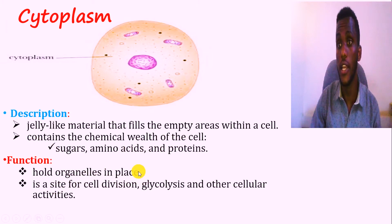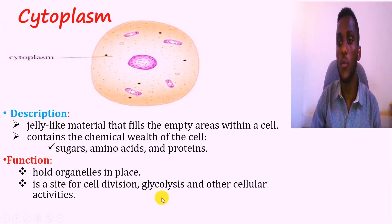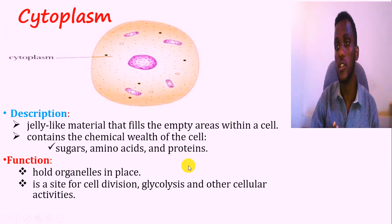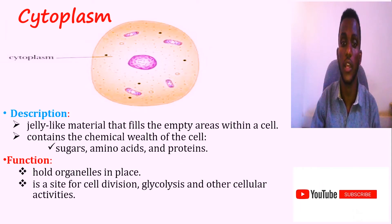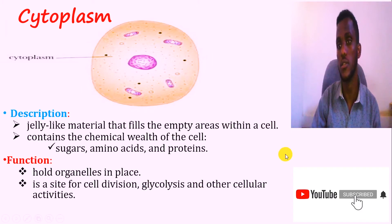The cytoplasm is important for cell division. In addition, it is important for anaerobic respiration like glycolysis — the cellular respiration process. So the cytoplasm is important for glycolysis.